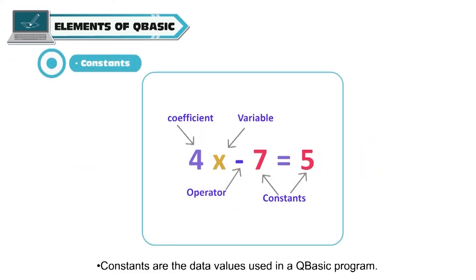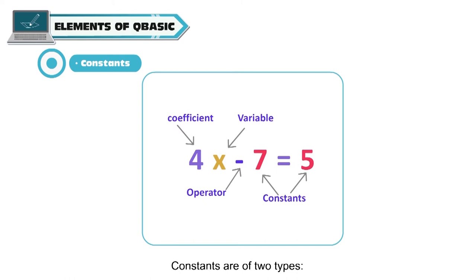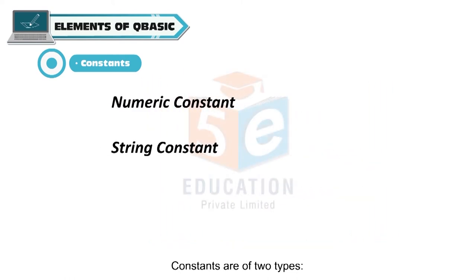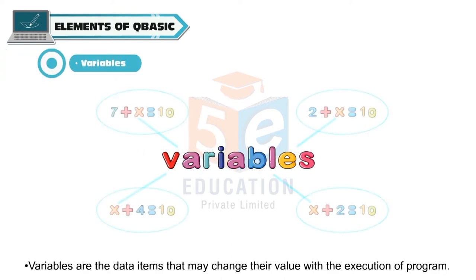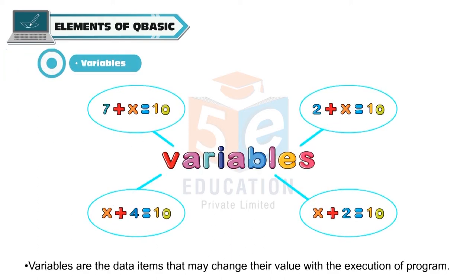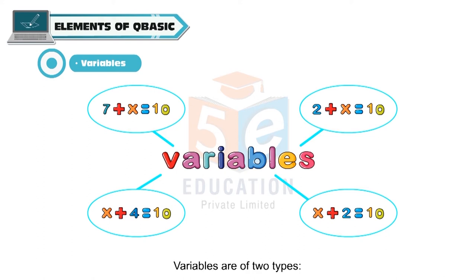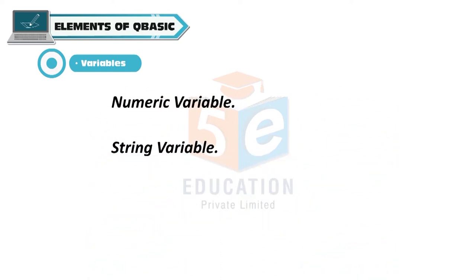Constants are the data values used in a QBasic program. They remain fixed throughout the program. Constants are of two types: numeric constant and string constant. Variables are the data items that may change their value with the execution of the program. Variables are of two types: numeric variable and string variable.